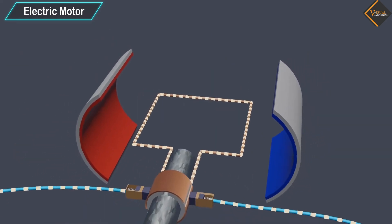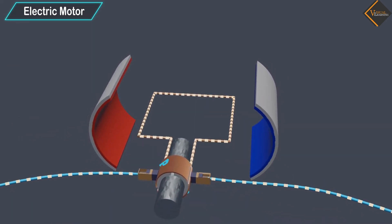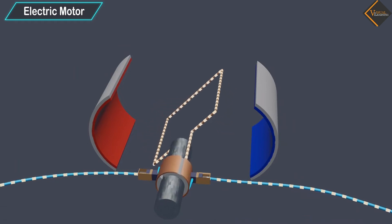Thus the coil and the axle O, mounted free to turn about an axis, rotate anticlockwise.